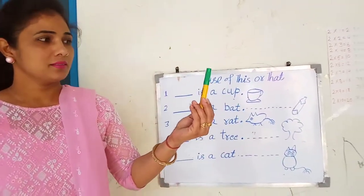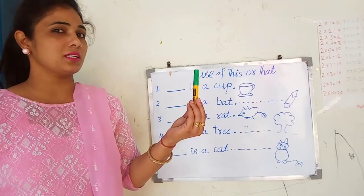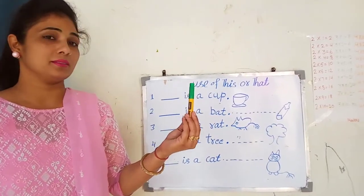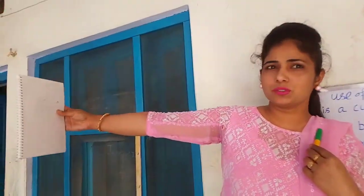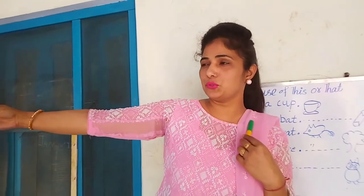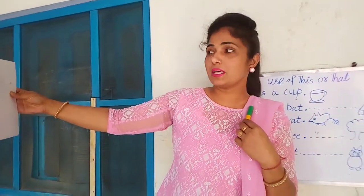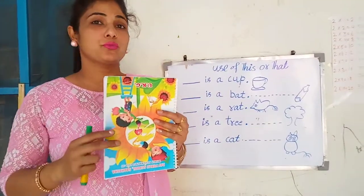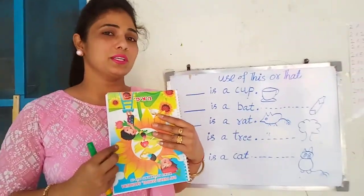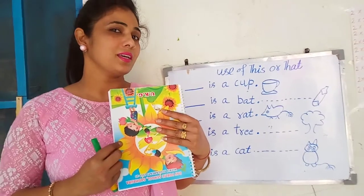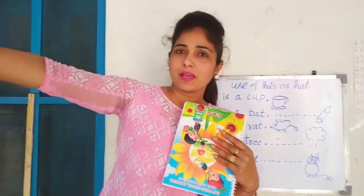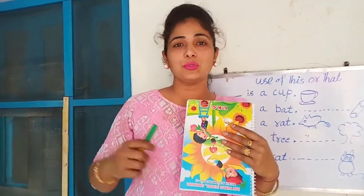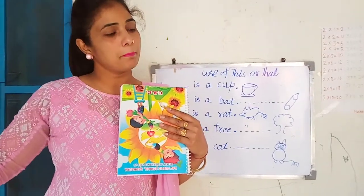Pen. In my hand, very close. So use this is a pen. Now the notebook is very far away, so we can use that. That is a book. Now the book is very close for me, so we can use this is a book and pen is far away. So we can use that is a pen.